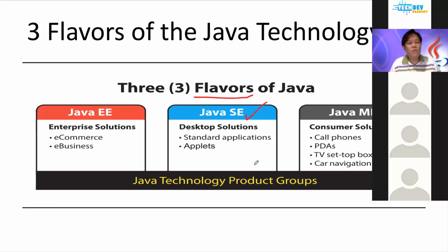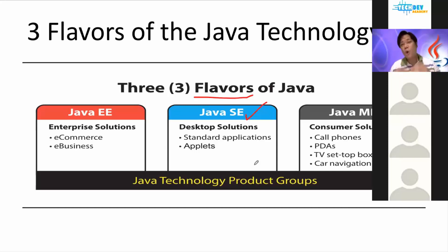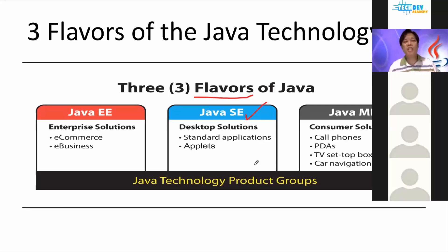Why did they use Java as the back-end for Android? Maybe because they came from Stanford University. What's so special about Stanford? Remember that Java is owned by Oracle and previously it was owned by Sun Microsystems. Sun — S-U-N — is actually an acronym for Stanford University Network.